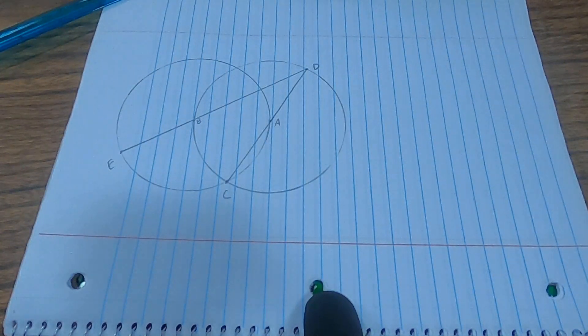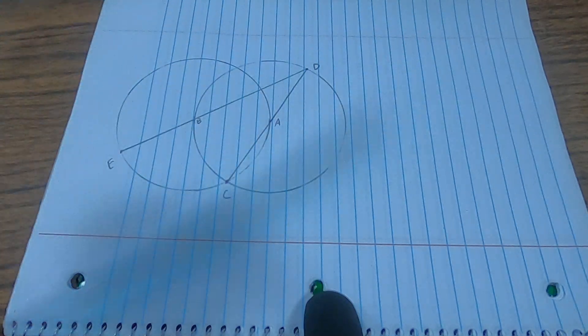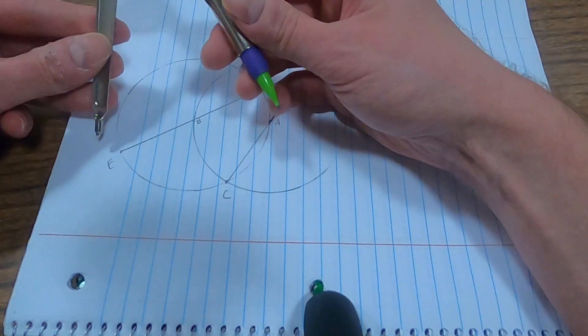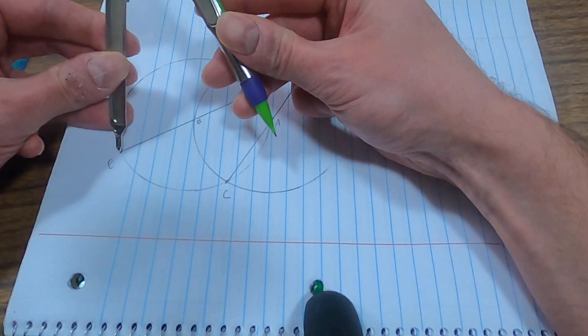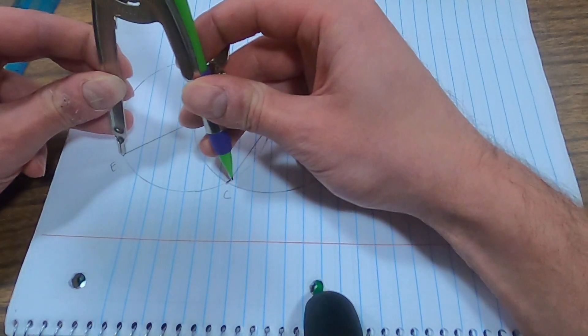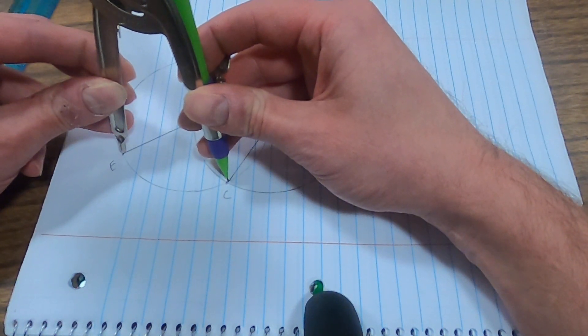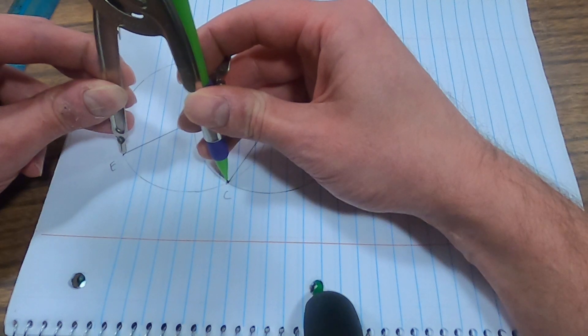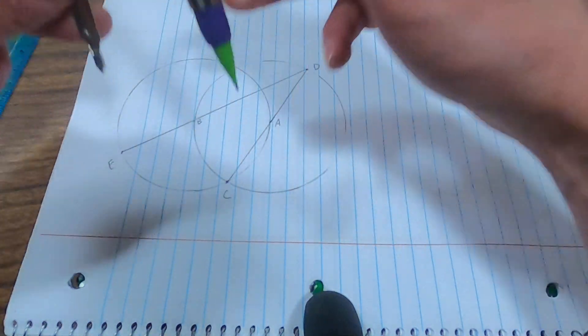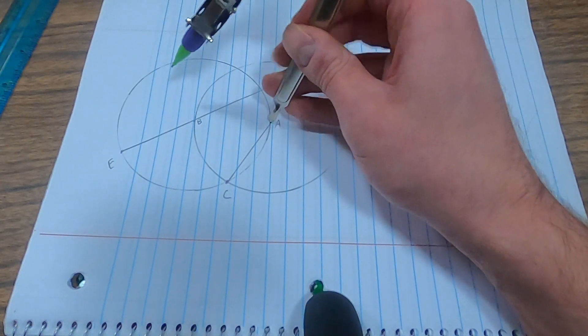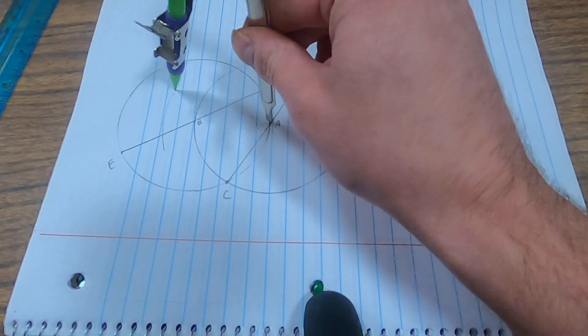Now, the way that we're going to make this is I'm going to have my compass and set it to the size of EC. So the size of this line segment EC that doesn't exist, it's not drawn, but I can still set my compass to that size. And then I'm going to center my circle on A and draw a bigger circle around A.